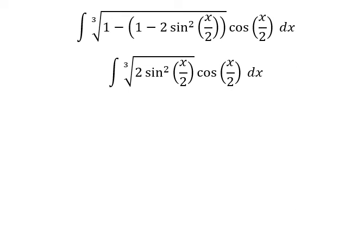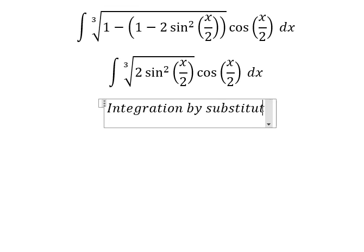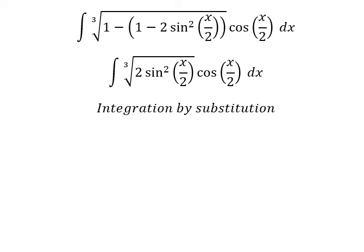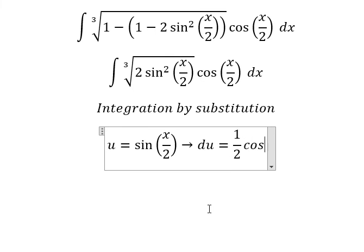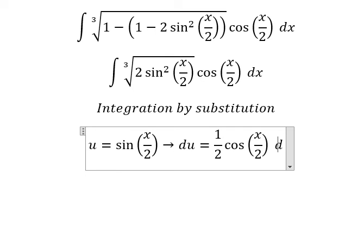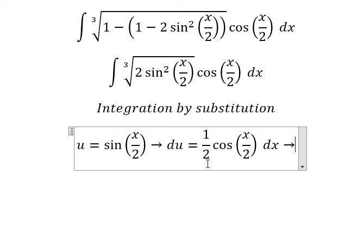Next, we can use integration by substitution. I will put u equal to sine of x over 2. Later that, we need to do first derivative for both sides. And we have 1 over 2 cosine of x over 2 dx. Because we don't have number 2 next to cosine in here, I will put number 2 go to the left.